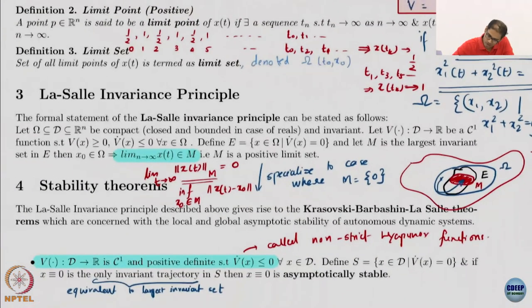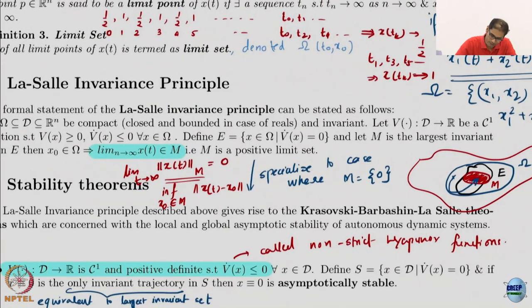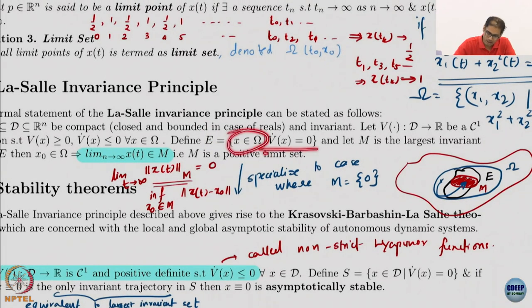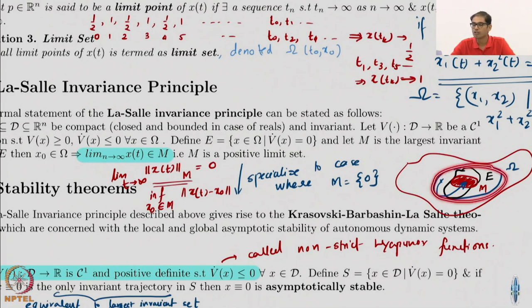So we have a closed and bounded set omega. Inside it, there are more sets. What is the first one? The first one is the set E, which is basically all the points in omega where V dot is exactly 0. That is probably something like this. The important thing to notice is that omega is an invariant set, we have already assumed it. Inside omega, there is E, but E is not necessarily an invariant set.